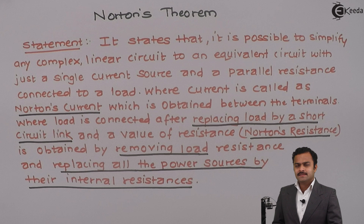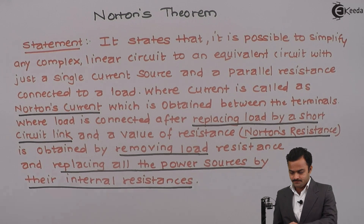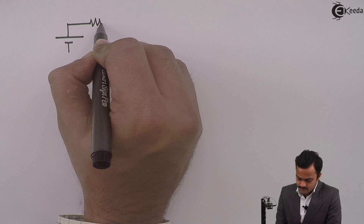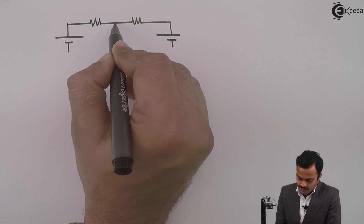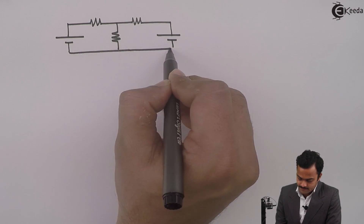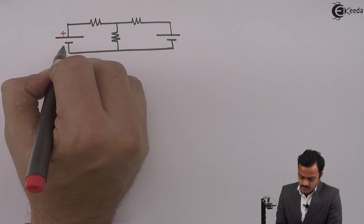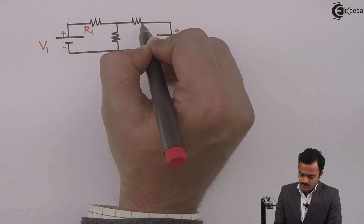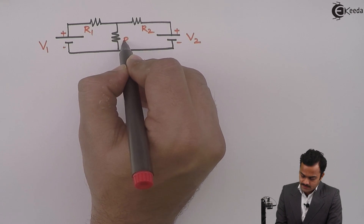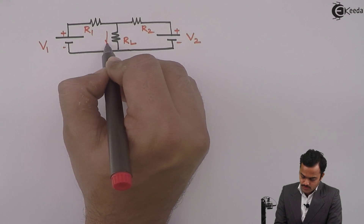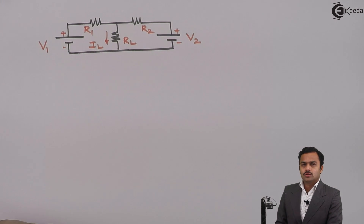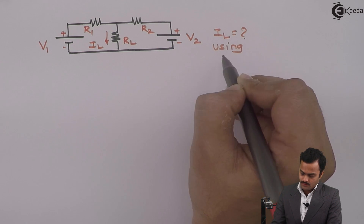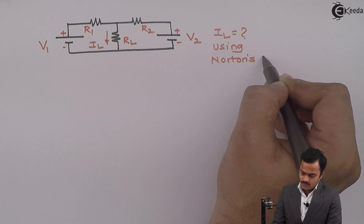To elaborate this concept, let's take a simple problem and solve it by Norton's theorem. I will consider a circuit with voltage sources and three resistances — V1, R1, V2, R2 — and a load resistance RL through which we are supposed to find the current. The objective is to get IL using Norton's theorem.